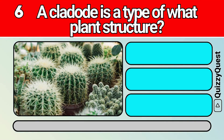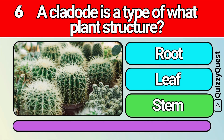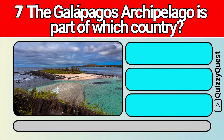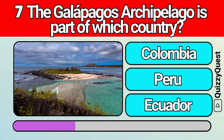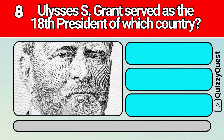A cladode is a type of what plant structure? The Galapagos Archipelago is part of which country? Ulysses S. Grant served as the 18th president of which country?